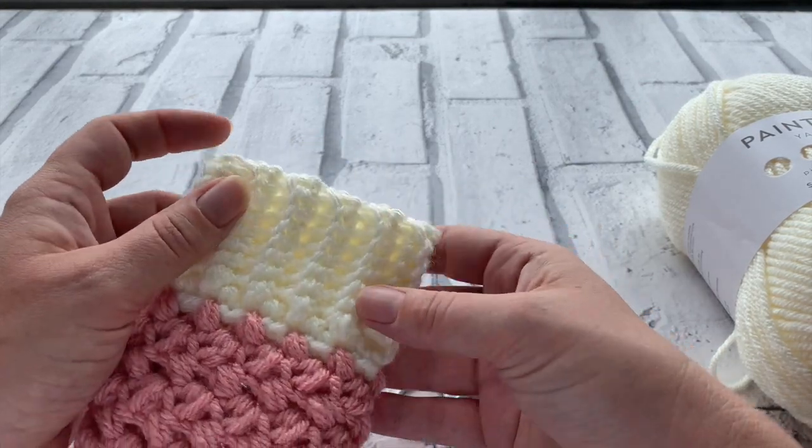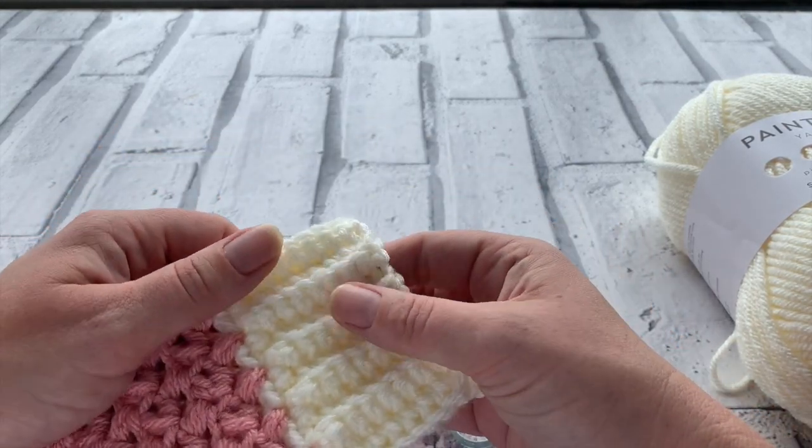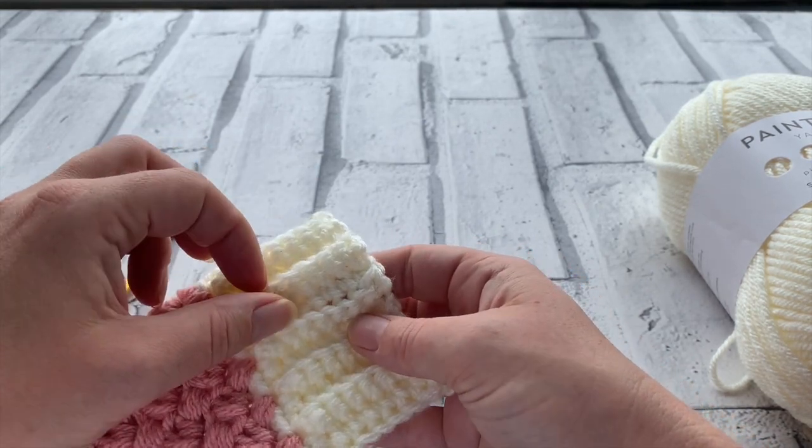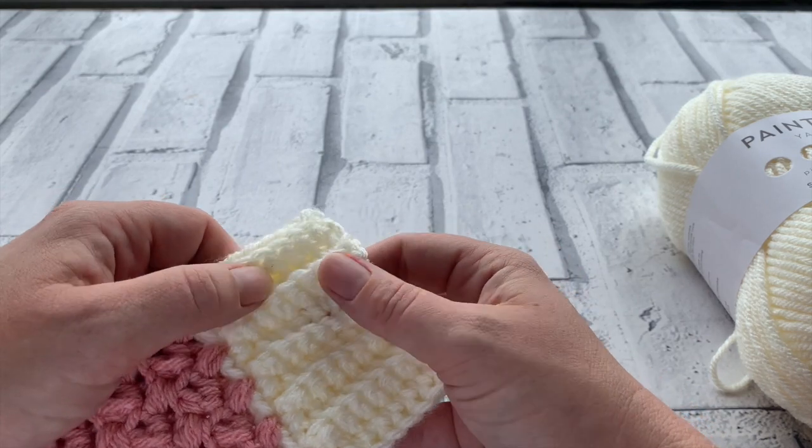Welcome to another crochet tutorial with CozyRosieUK. Today I'm going to be showing you how you can make your very own crocheted ribbing using the double crochet stitch or the US term single crochet stitch.